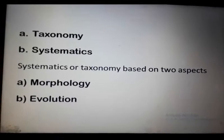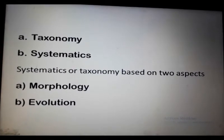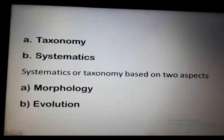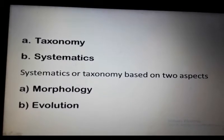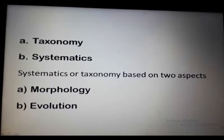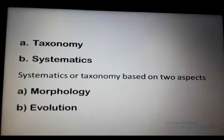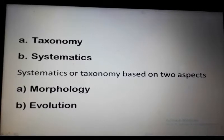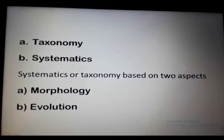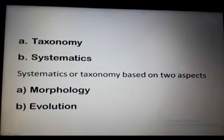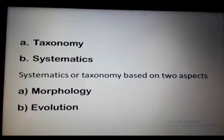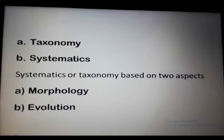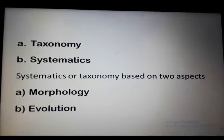Regarding morphology: according to the modern classification system given by Carolus Linnaeus, which is still used today, different species can be grouped into the same categories on the basis of similarities between them. A group of animals or plants with similar characteristics forms a taxon.